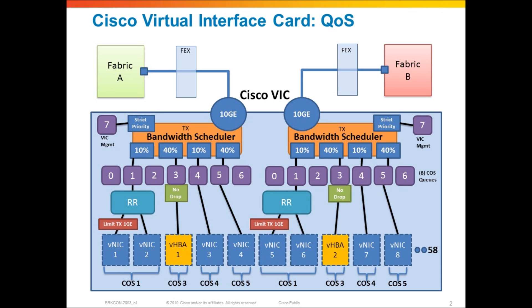It's going to do that based on up to eight cost-based queues. We have eight queues on the adapter that are all identified by cost values, and the bandwidth scheduler is going to service bandwidth from those queues based on a QoS policy that was defined globally in the UCS Manager.